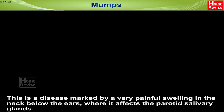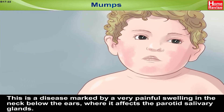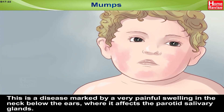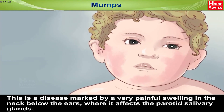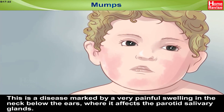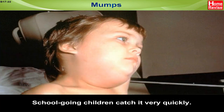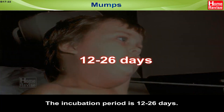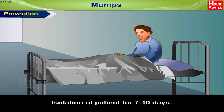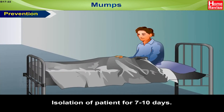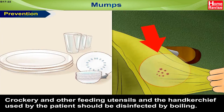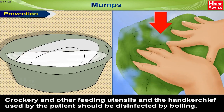Mumps is a disease marked by a very painful swelling in the neck below the ears, where it affects the parotid salivary glands. School-going children catch it very quickly. The incubation period is 12 to 26 days. Prevention includes isolation of the patient for 7 to 10 days. Crockery and other feeding utensils and handkerchiefs used by the patient should be disinfected by boiling.